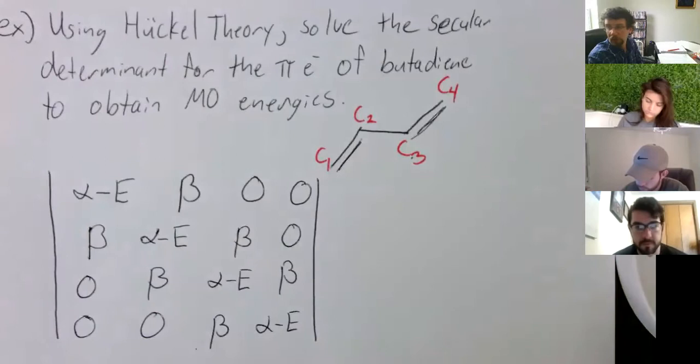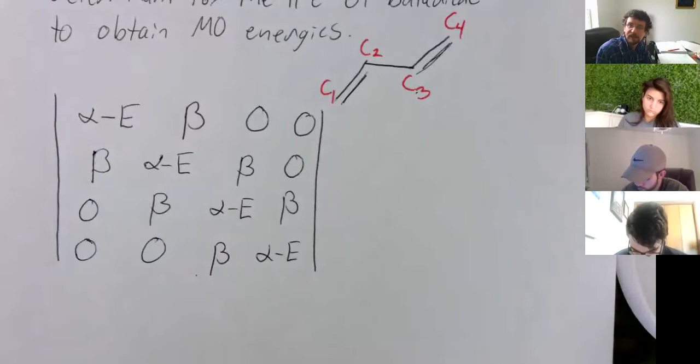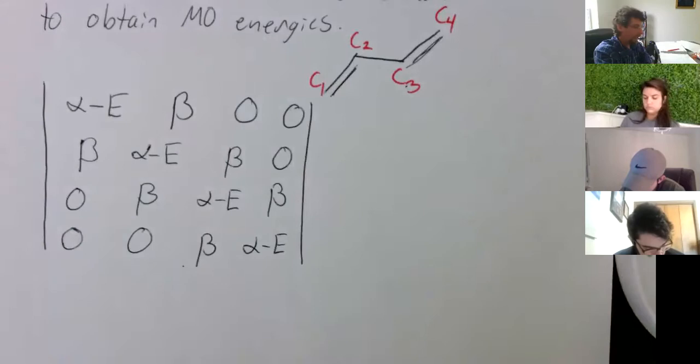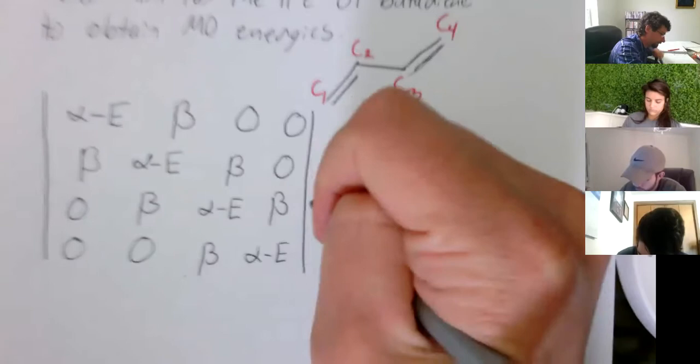Okay. So what you see is it's down that diagonal right along here. It's all alphas minus E's. Any adjacent carbons are going to have a value of beta. Anything else gets a value of zero. Okay. And what's this whole thing equal to? Zero. Zero.